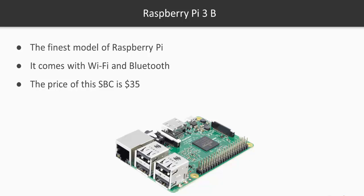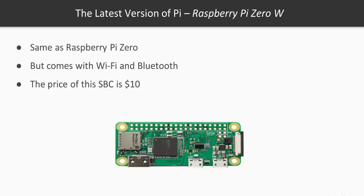If you want to buy the Raspberry Pi 3, I will leave a link in the description so you can easily buy it. Now, talking about the latest version — the Raspberry Pi 0W — which is the same as Raspberry Pi 0 but also comes with Wi-Fi and Bluetooth. The cost of this board is $10.